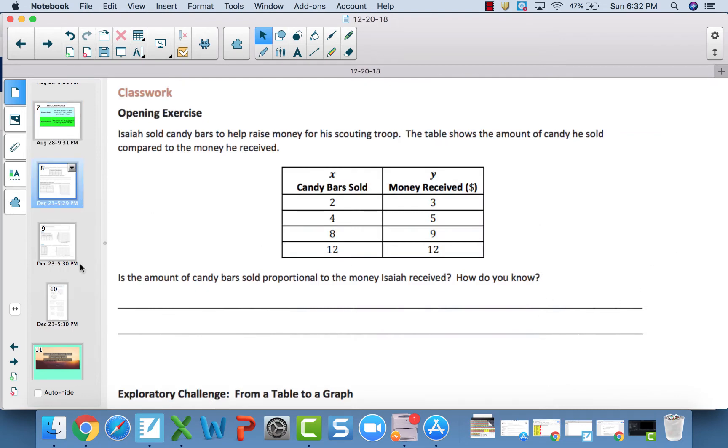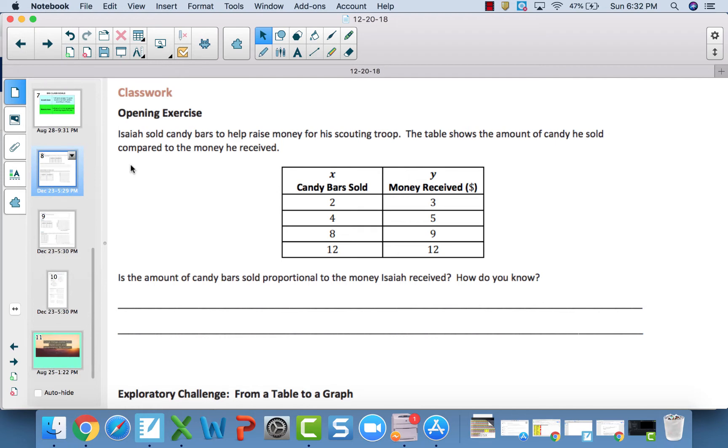Our opening exercise: Isaiah sold candy bars to help raise money for his scouting troop. The table shows the amount of candy he sold compared to the money he received. Is the amount of candy bars sold proportional to the money received? How do you know? Answer this, then come back and check the video to ensure you got the correct answer.